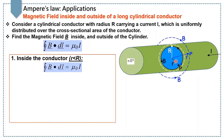To find the magnetic field inside and outside of this conductor, we apply Ampere's law, which states that the closed integral of B dot dl is equal to μ₀i.